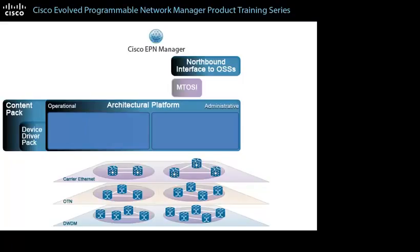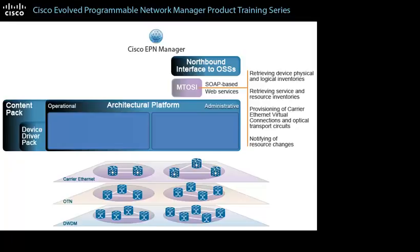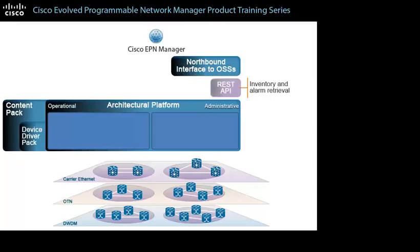Cisco EPN Manager provides the Multi-Technology Operations System Interface or MTOSI and REST API for northbound OSS integration. The system implements the MTOSI interface as a set of SOAP-based web services which provide interfaces that support retrieving device physical and logical inventories, retrieving service and resource inventories, provisioning of carrier Ethernet virtual connections and optical transport circuits, and notifying of resource changes including when objects are created or deleted or when object attribute values change. The REST API supports inventory and alarm retrieval.